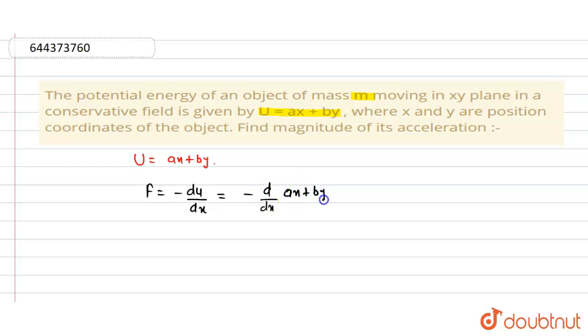We have to find the magnitude of acceleration in xy plane, so this can be written as minus d by dx of ax and minus d by dx of by.